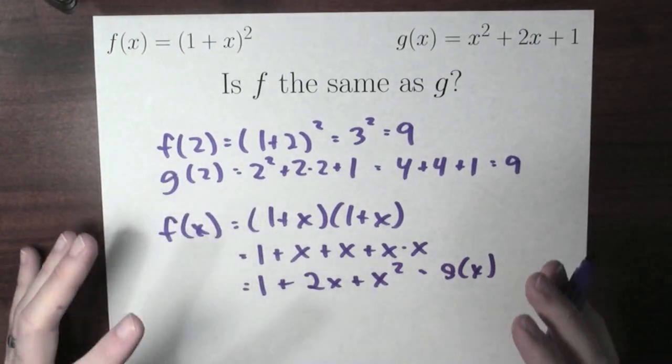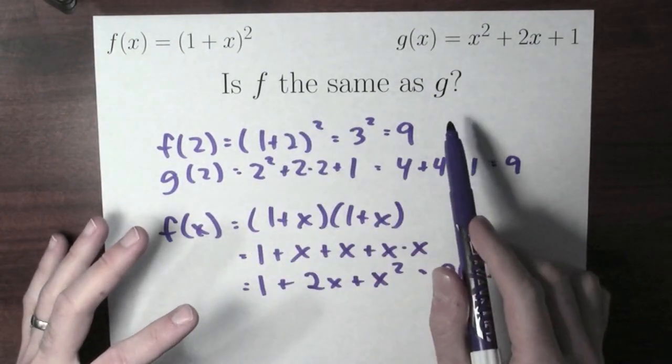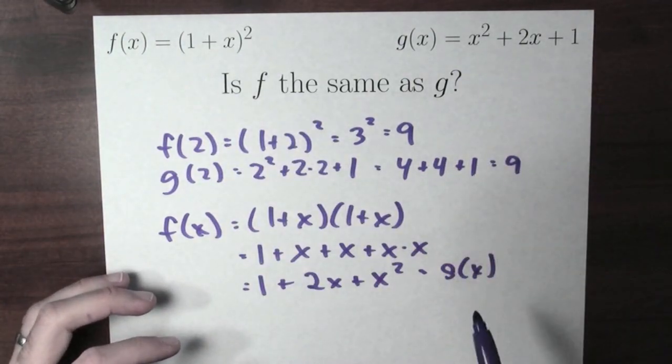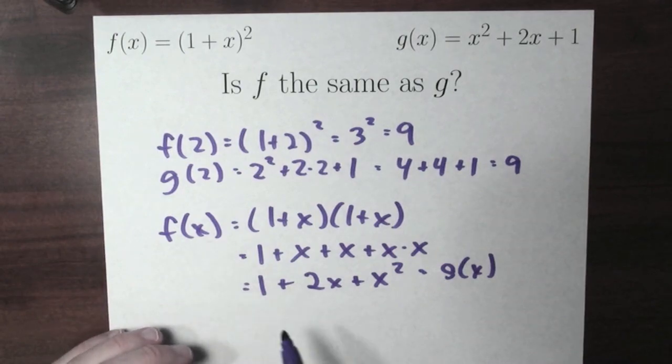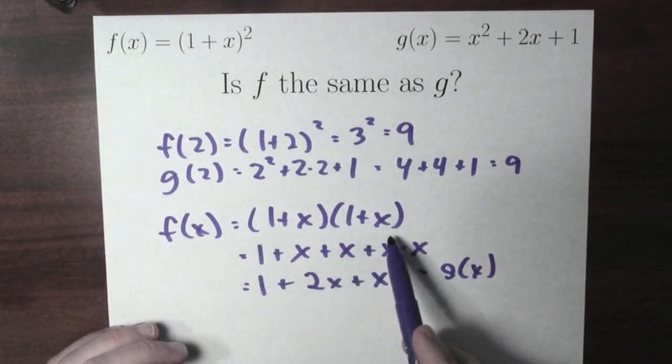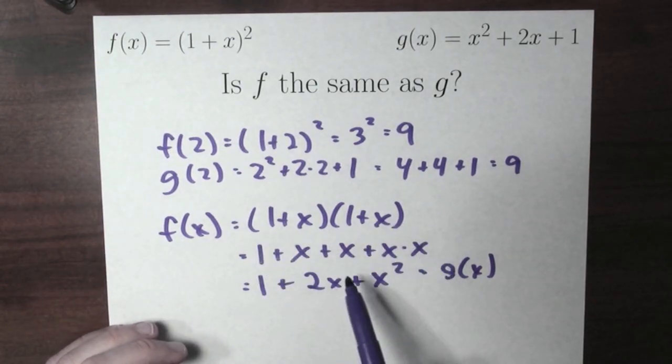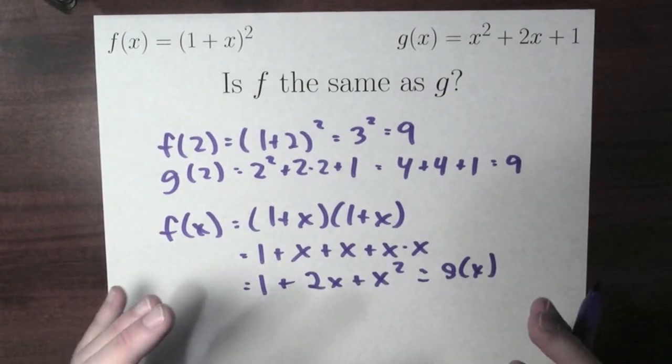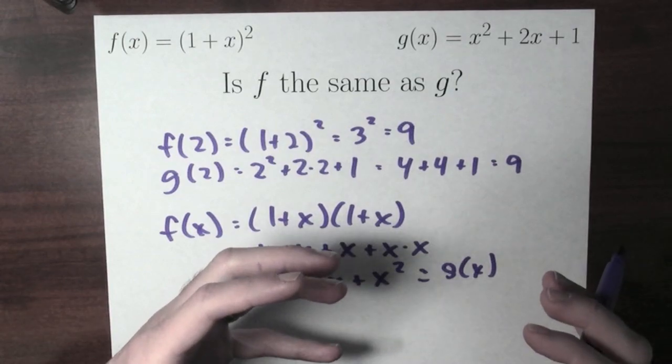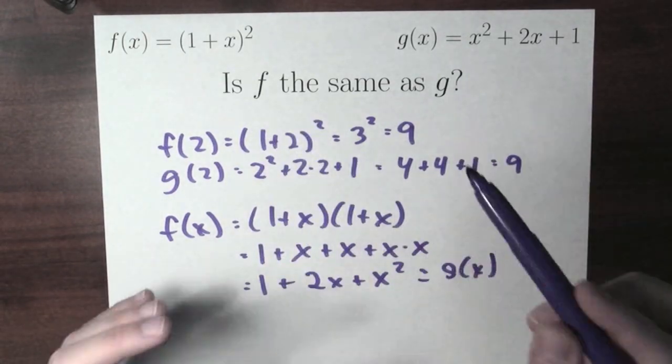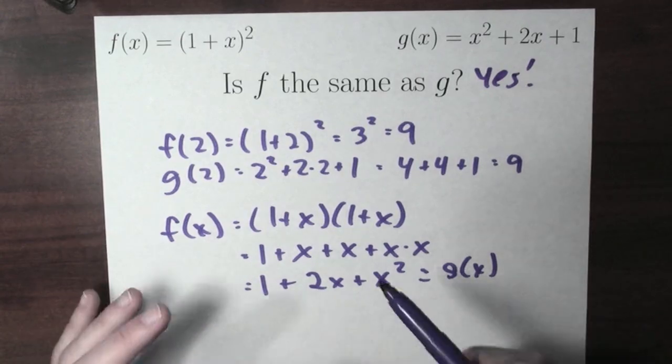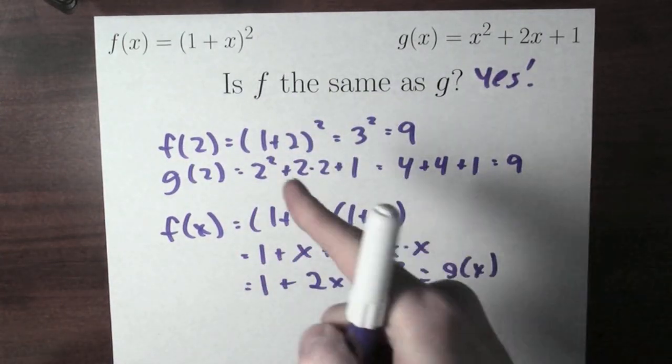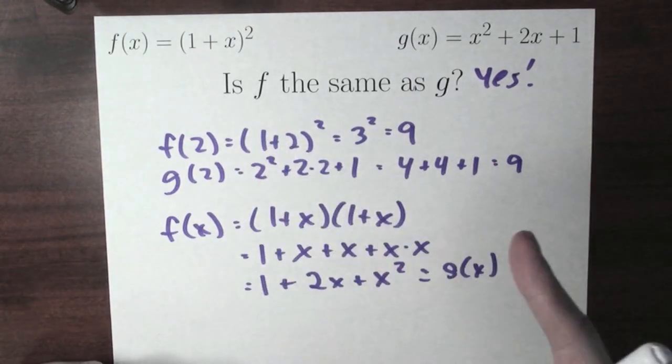This is really quite surprising. f and g don't compute their output in the same way. This one is doing something different than this function. And yet, for any input value, f's output value is this, which is the same by expanding out as g of x. So how we're going to deal with this? We're going to say that f and g are the same function. Not because they have the same rule, but because for every input value, they have the same output value.